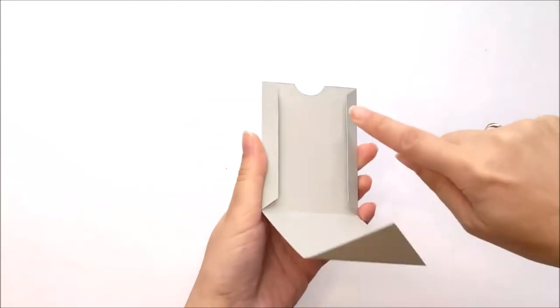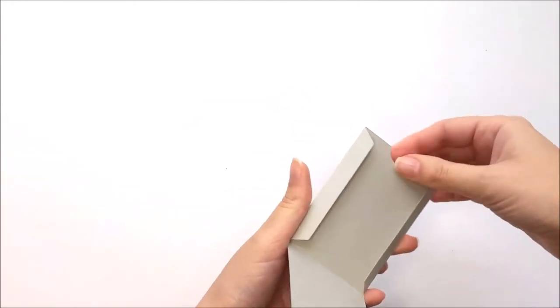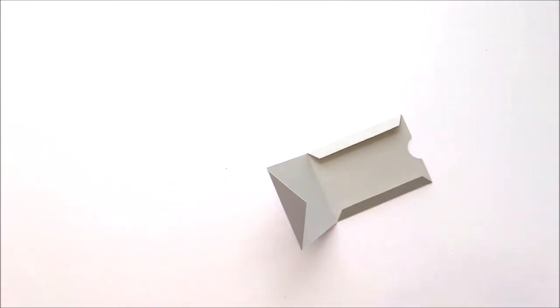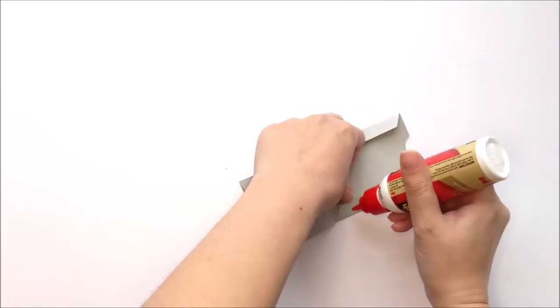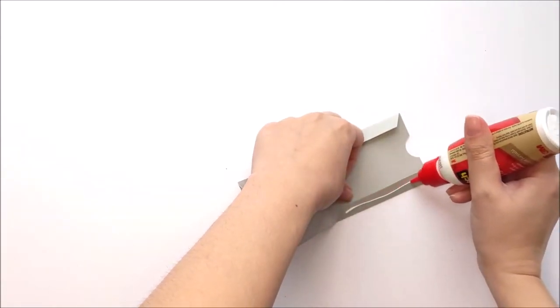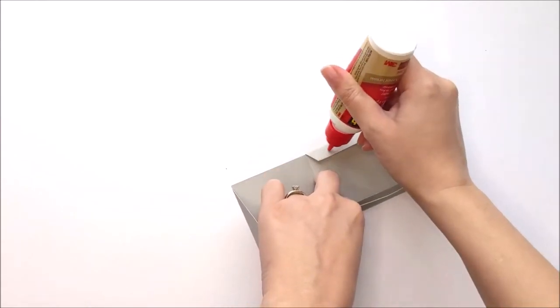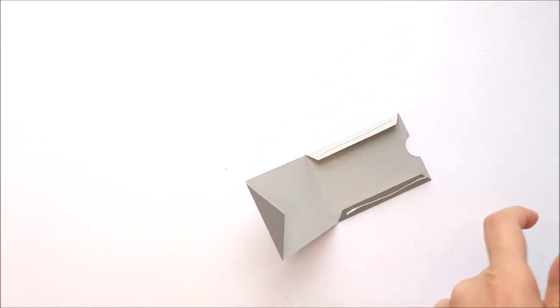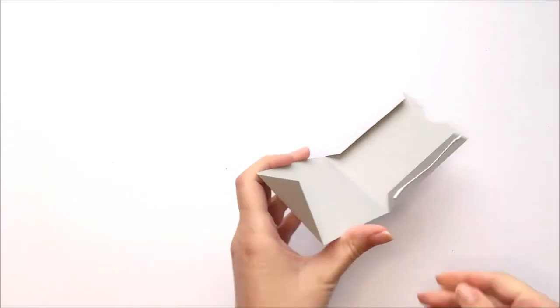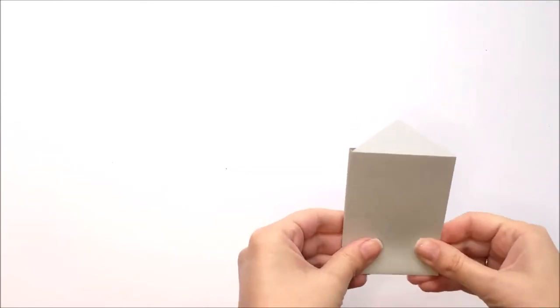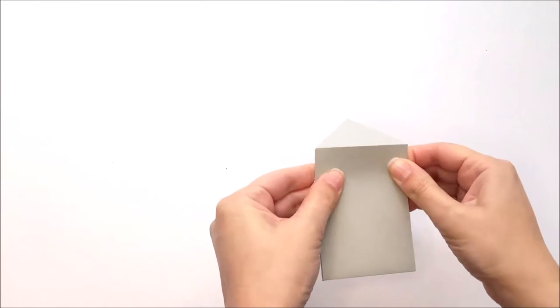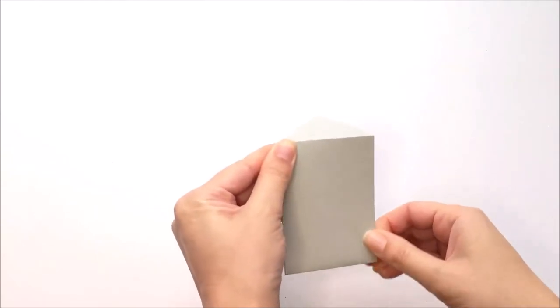Then you're going to apply glue to these side tabs here to assemble the pocket. And just fold that in half and press until the glue holds.